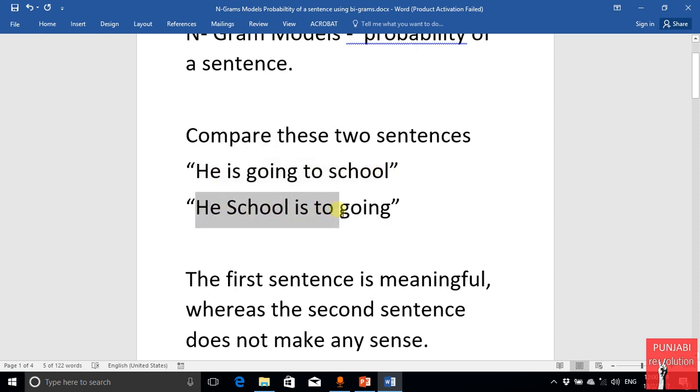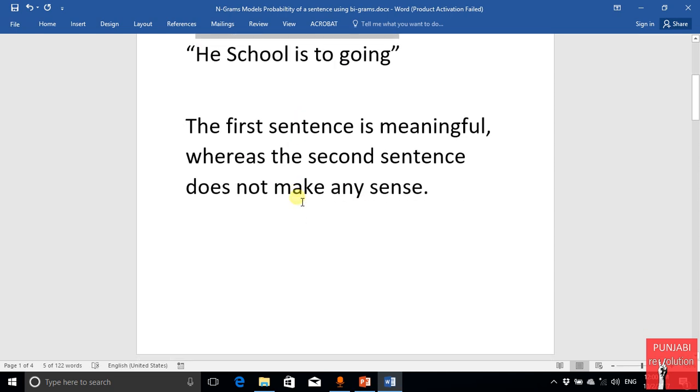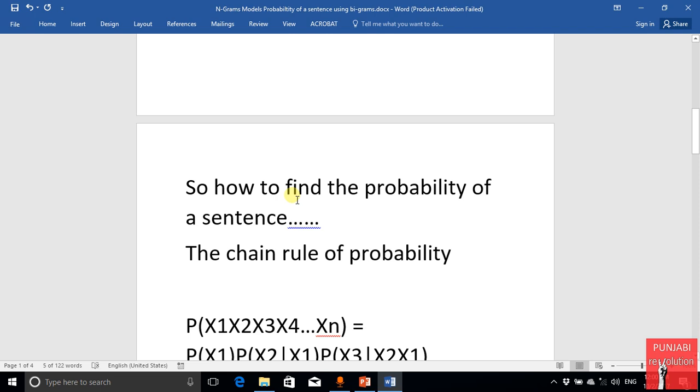So this sentence should have high probability of occurring and this should have very low probability of occurrence. So how can we find the probability of a sentence by using n-gram models? First of all, we use the chain rule of probability that you might have studied in your statistics class.